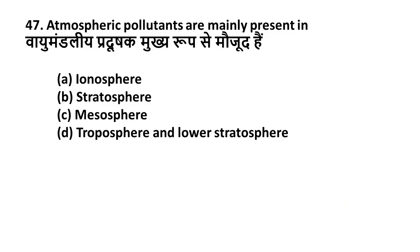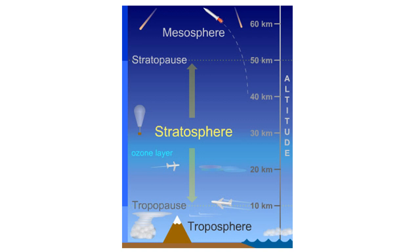Question 47: Atmospheric pollutants are mainly present in — Option A: Ionosphere, Option B: Stratosphere, Option C: Mesosphere, Option D: Troposphere and lower stratosphere. The right answer is Option D — atmospheric pollutants are present in the troposphere and lower stratosphere. The pollutants are mainly found in the troposphere and also at the lower stratosphere.